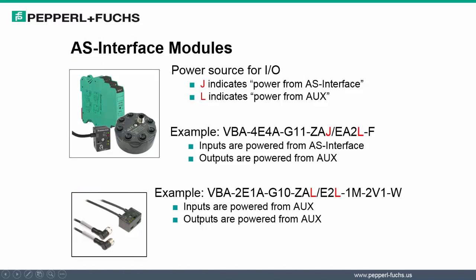Let's now take a closer look at power source requirements for AS Interface modules. Model descriptions are very helpful in determining the power supply requirements. From the J and the L noted in the description, we can determine where the power is needed. In the first example on the slide, we have a G11 module. In the model number description, we have a J and an L noted, indicating that the module has power requirements both from AS Interface, yellow cable, and aux black cable.